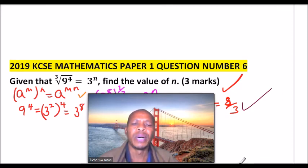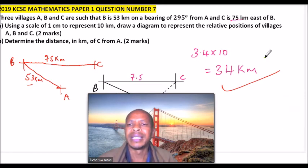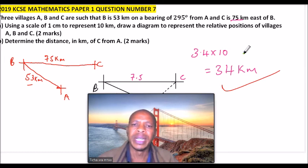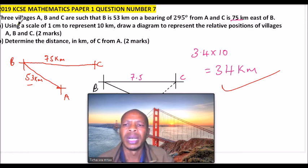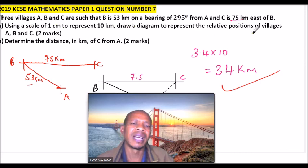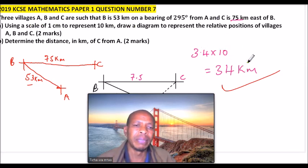The other one is question number seven. You did scale drawing in form one, bearings. Can you be able to represent this information of their villages, their bearings, the distances, and be able to get the default? I have explained how to do that very clearly.